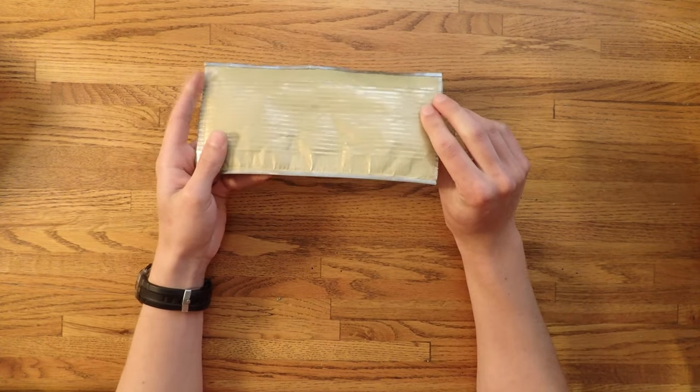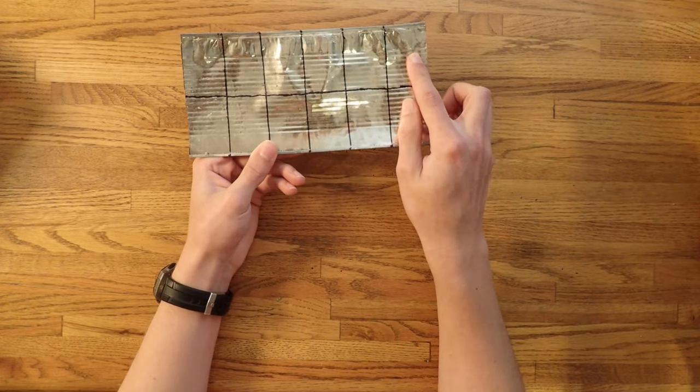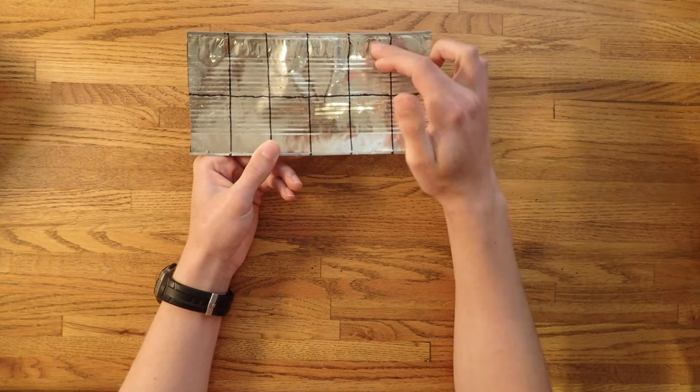Next, mark off a grid on the back about six along the length and then split it in half on the width, ending up with a grid for your scales.